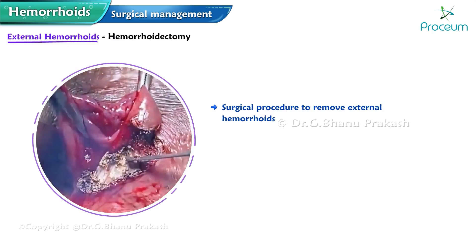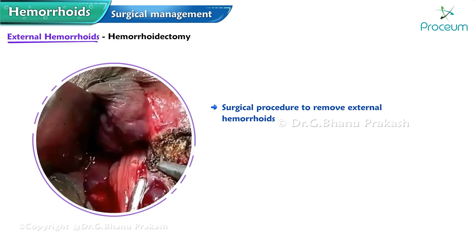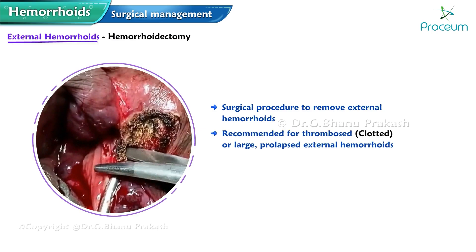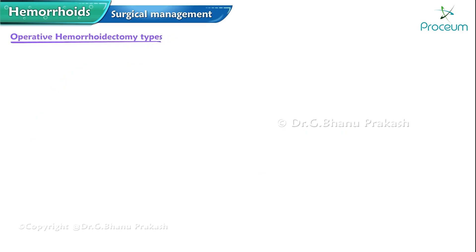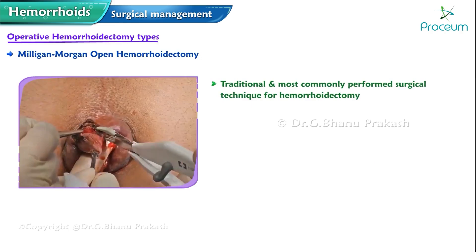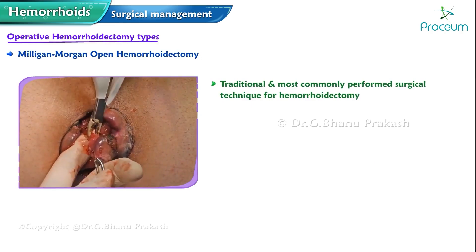Hemorrhoidectomy is a surgical procedure performed to remove external hemorrhoids. It is typically recommended for thrombosed external hemorrhoids or large prolapsed external hemorrhoids that do not respond to conservative measures. During a hemorrhoidectomy, the surgeon removes the hemorrhoid tissue and sutures the area.